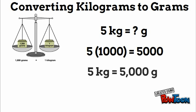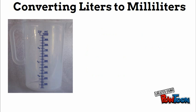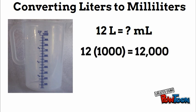Now let's convert liters to milliliters. We know one liter is a thousand milliliters, so twelve liters multiply by a thousand would give us twelve thousand. So twelve liters equals twelve thousand milliliters.